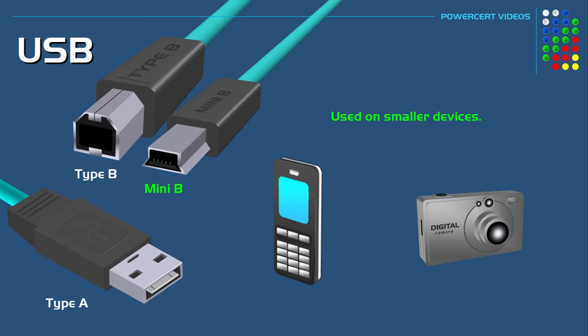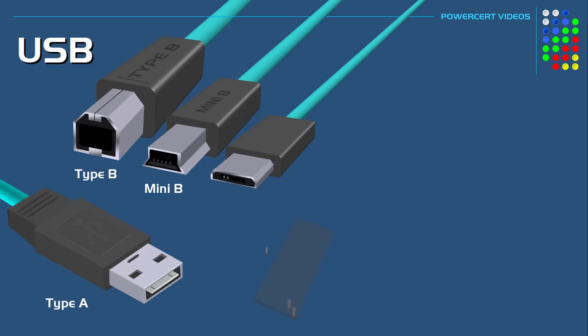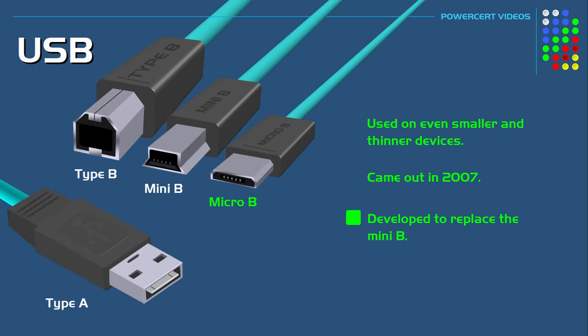That brings us to the Micro-B USB connector. The Micro-B is approximately the same width as the Mini-B, but it's about half the thickness, which enables it to plug into even smaller and thinner devices. It's made to connect to modern smartphones, modern digital cameras, MP3 players, and so on. The Micro-B came out in 2007 and its intent was to replace the Mini-B.